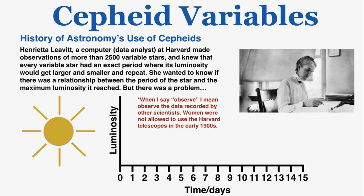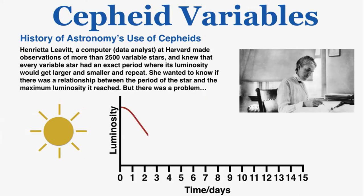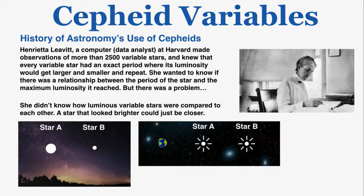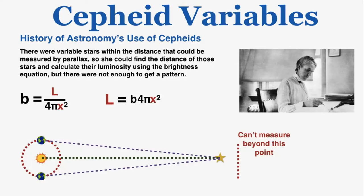Leavitt knew that every variable star had an exact period where its luminosity would get larger and smaller and repeat, and she wanted to know if there was a relationship between a star's period and the maximum luminosity it reached. She had the same problem as the brightness equation: she couldn't compare the true luminosity of Cepheid variables because she could only observe their brightness, and a brighter star could just be closer rather than more luminous. There were variable stars within parallax range, but not enough to establish a clear pattern.